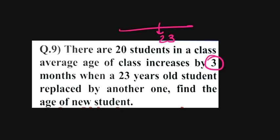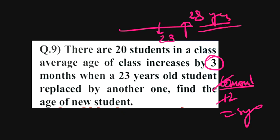They mean 60, and divided by 12 means 5 years. 5 years means 23 plus 5 means 28 years. The answer will be, age of the new student will be 28 years.